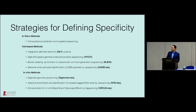There are a number of methods now for defining specificity: the IDLV capture method was one of the original methods, followed by HTGTS, BLESS, GuideSeq, DiGenomeSeq, SiteSeq, and CircleSeq. Today I'm going to tell you about two methods that I helped lead the development of.